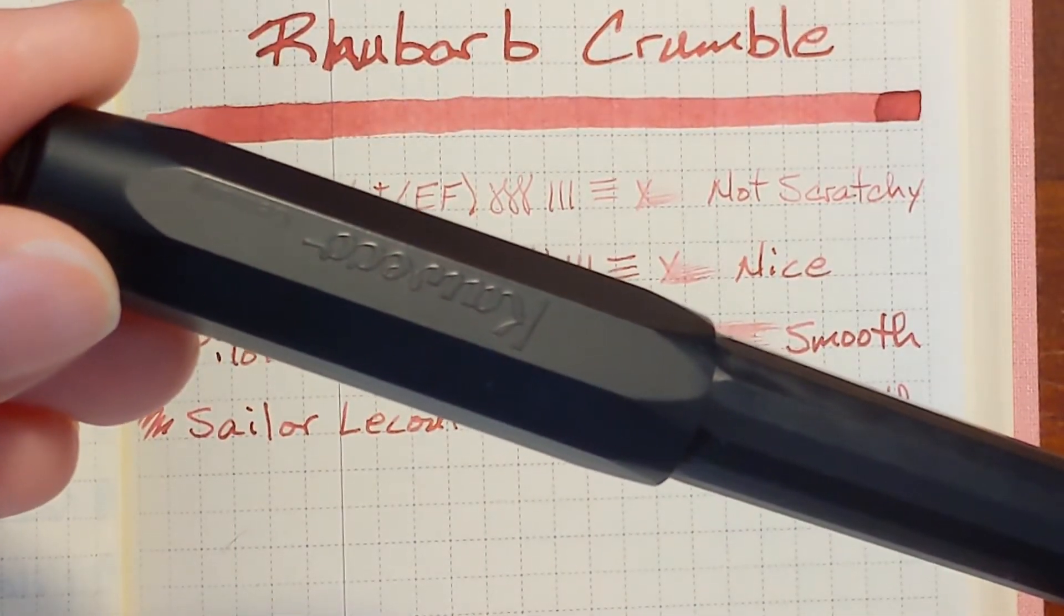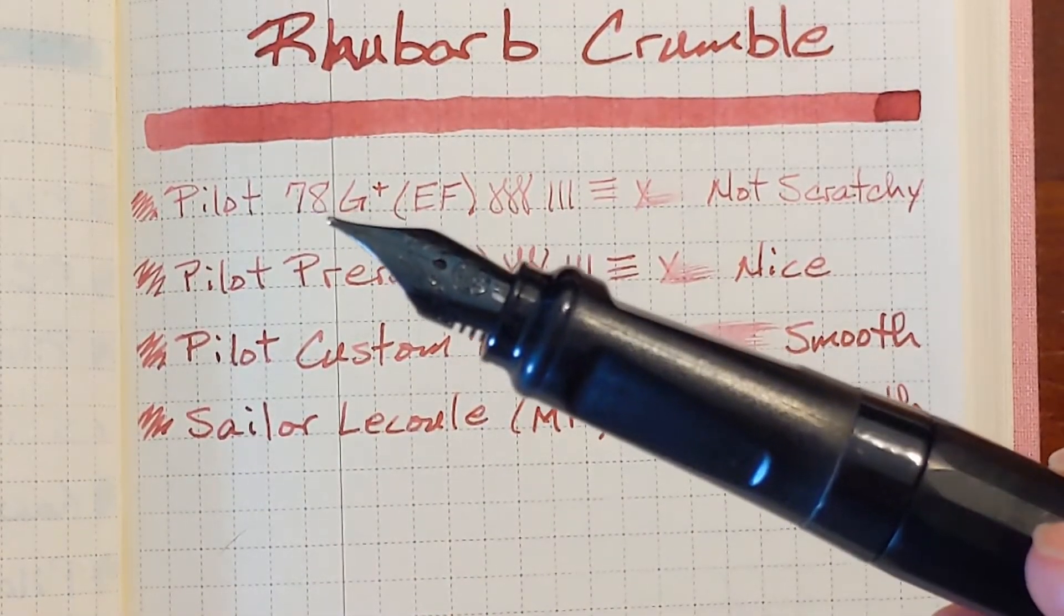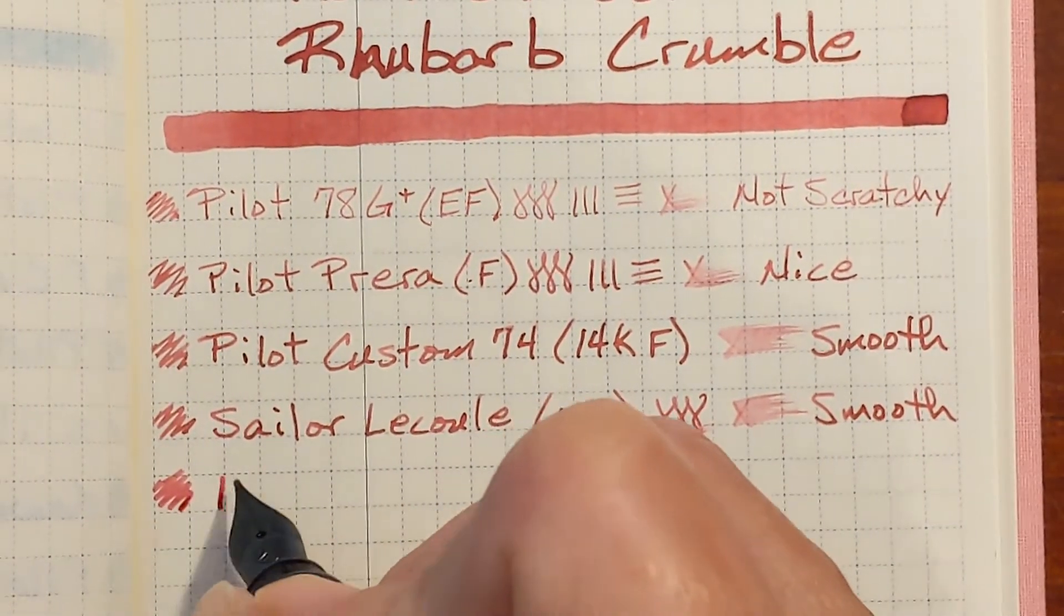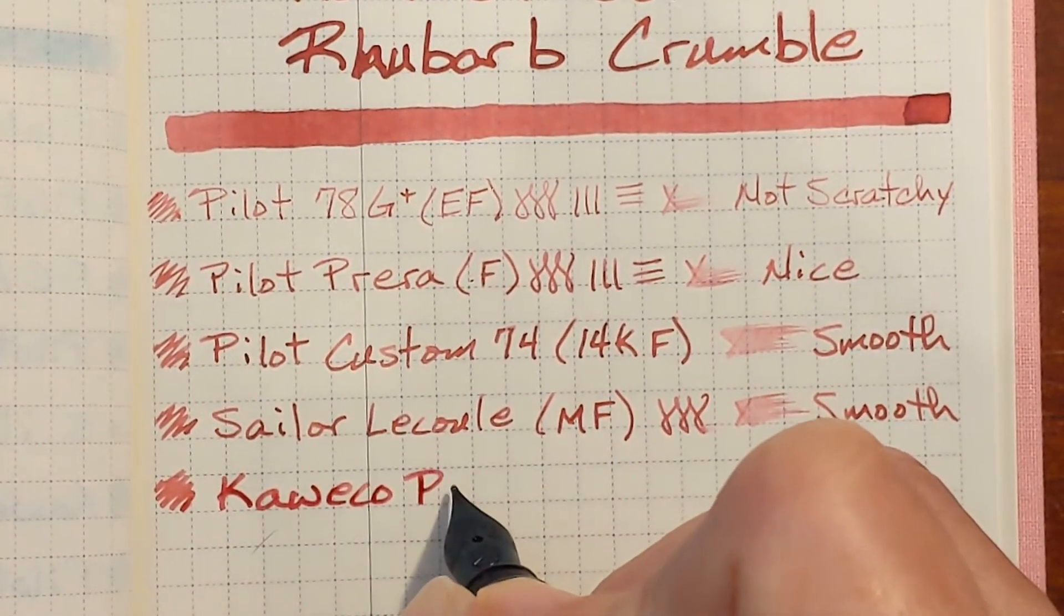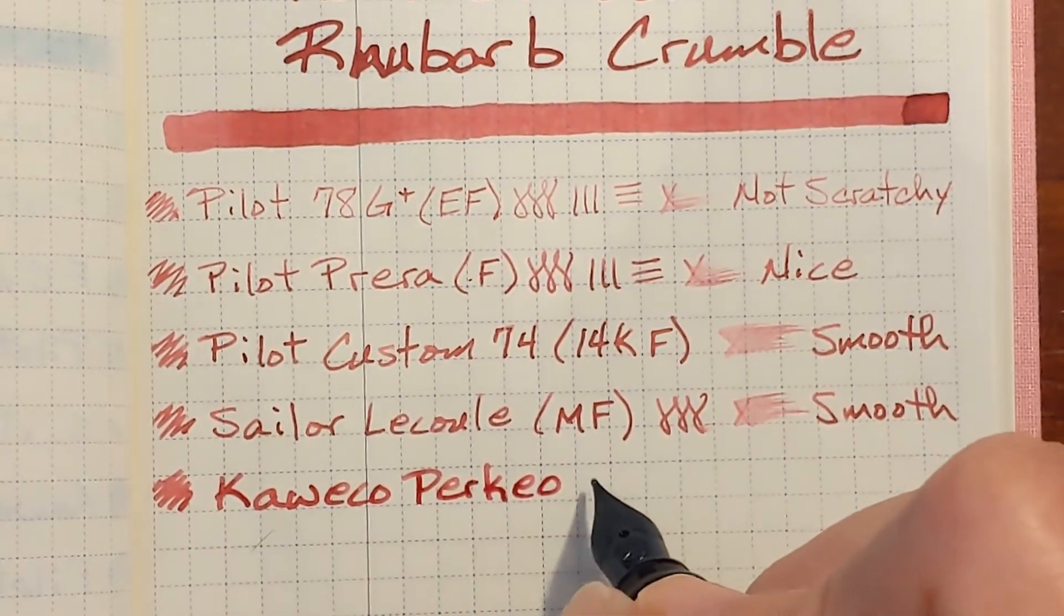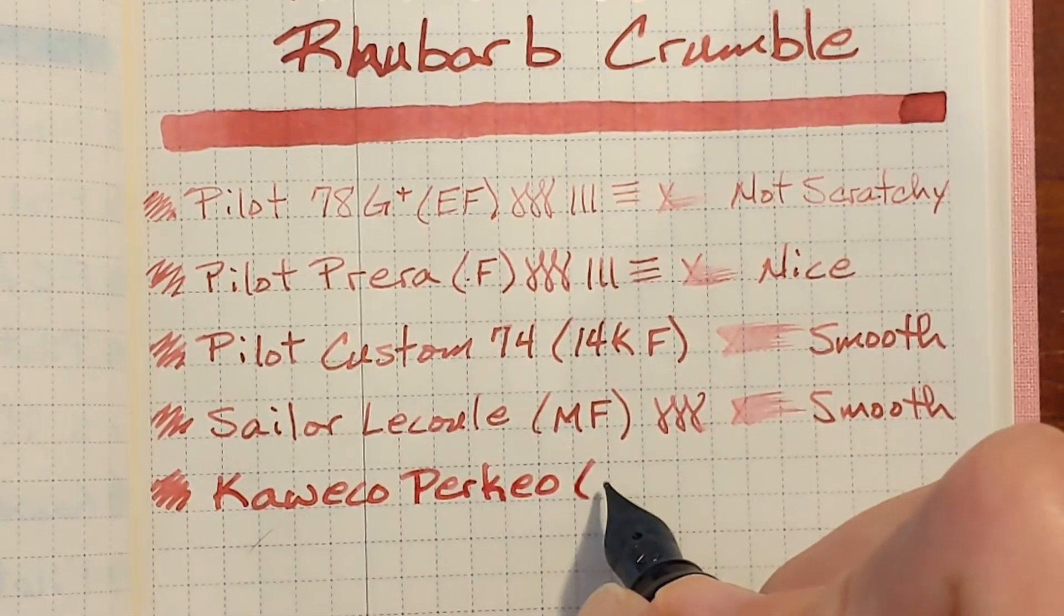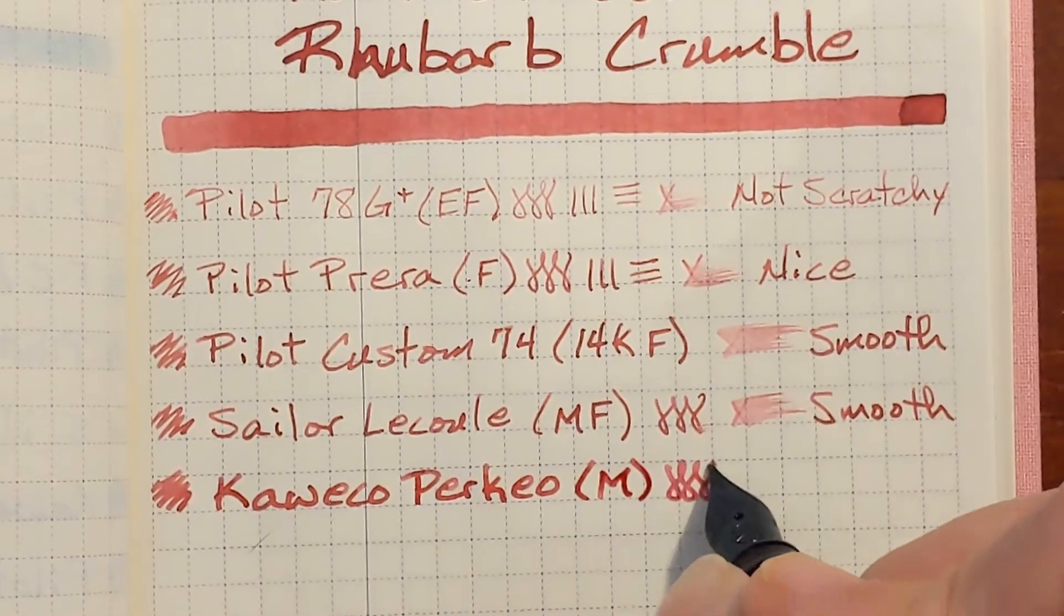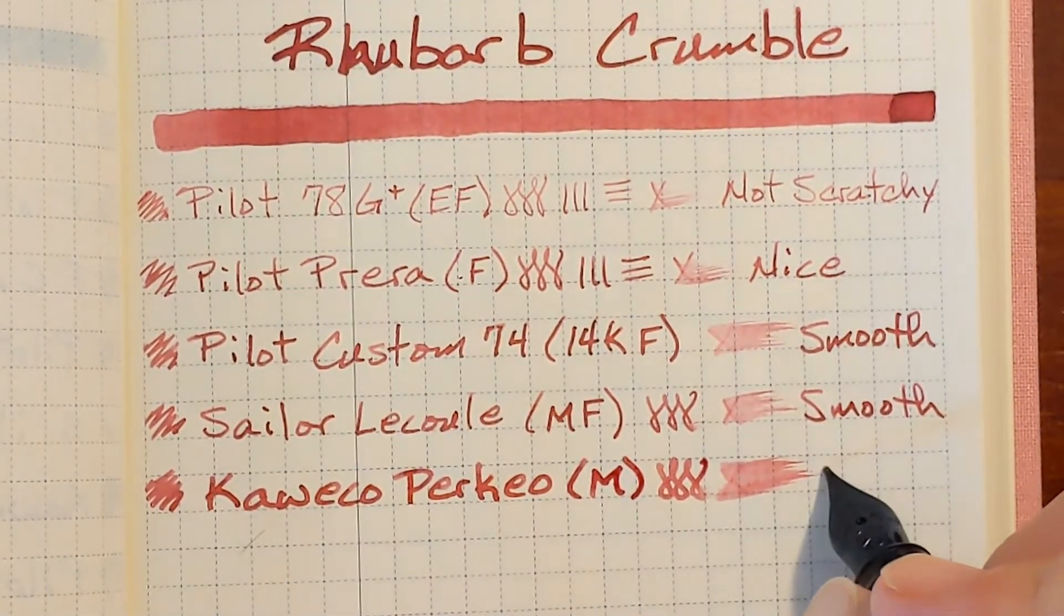Next I've got my Kaweco Perkeo all black with a medium stainless steel nib. I like the sound of this nib on paper. You can hear the, it doesn't feel scratchy but you can hear the sound of the nib on paper. I just really like it and the writing experience is very nice.